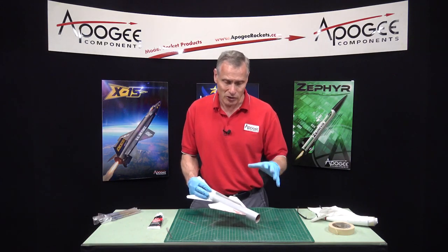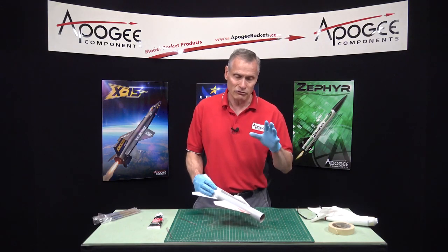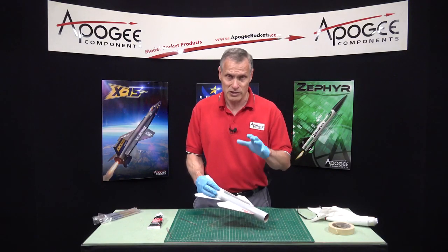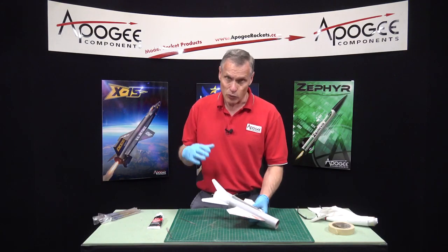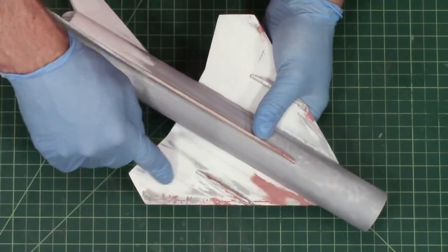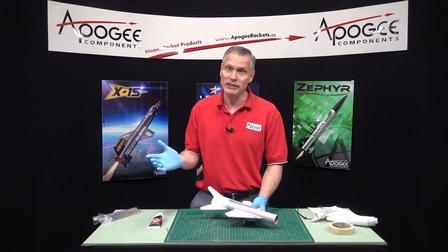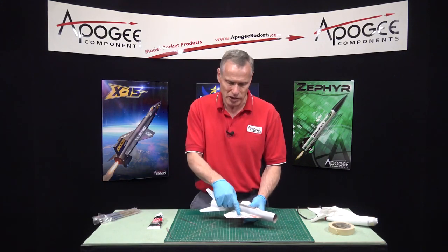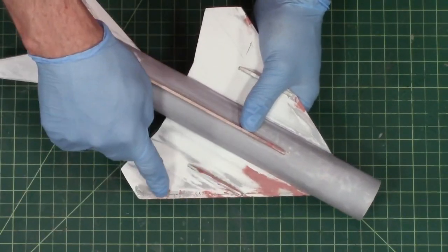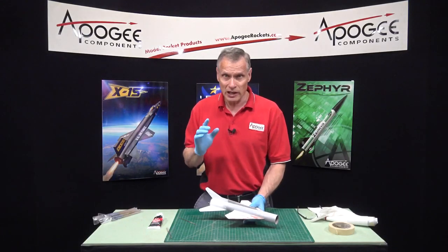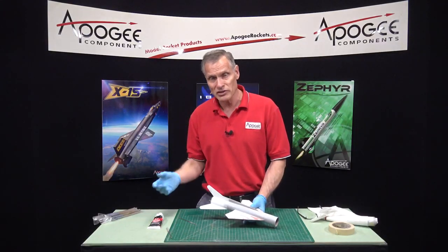The nice thing about this stuff is that it dries very fast. So probably within a half hour I'm going to put on a coat of primer. When I put the primer on, it's going to be very light. The reason is I'm putting it on top of paint, and sometimes, as you know, you can get those paint incompatibility problems and you get the crazing like what happened up here on this edge.